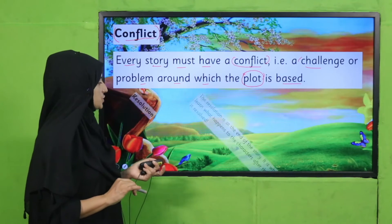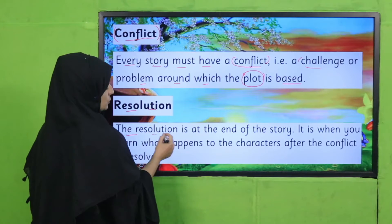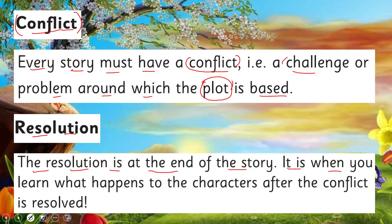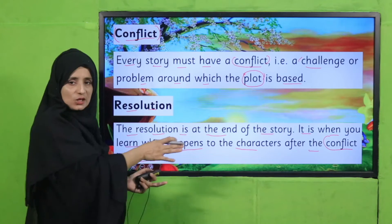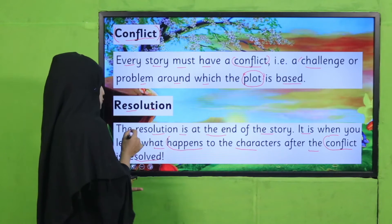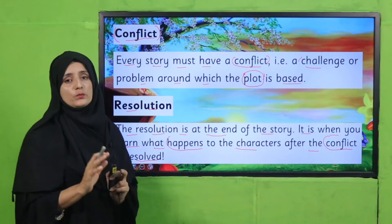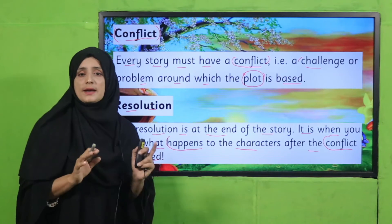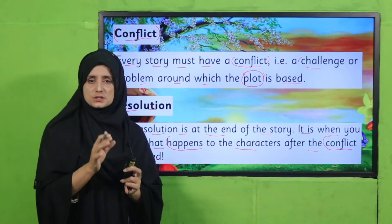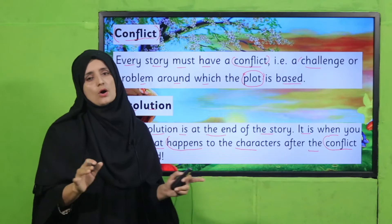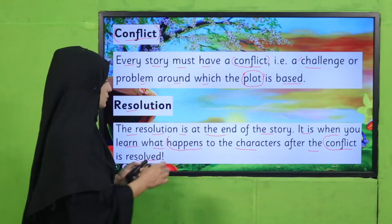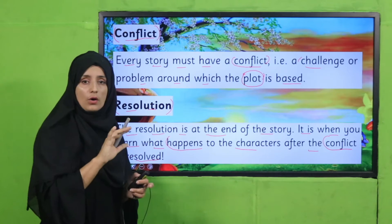Next is Resolution. The resolution is at the end of the story — it is when you learn what happens to the characters after the conflict is resolved. This is the sequence in a story. Resolution means that at the end, after facing all situations, the character finally resolves all problems. So resolution means the solution of all problems.